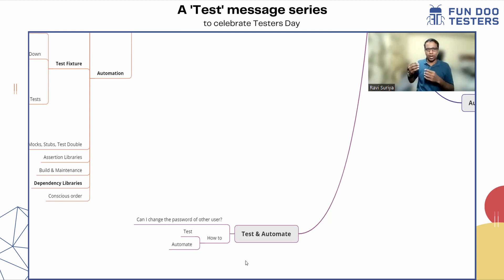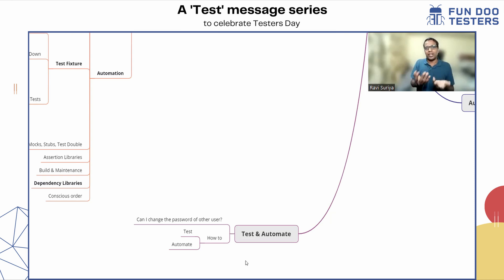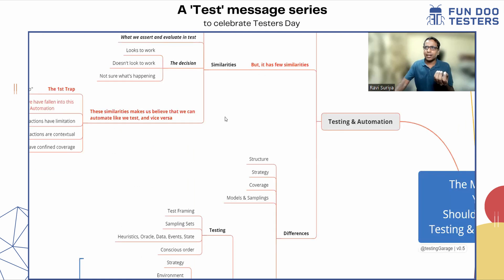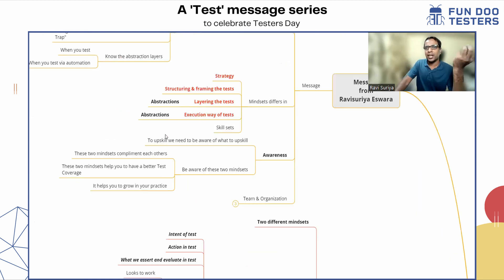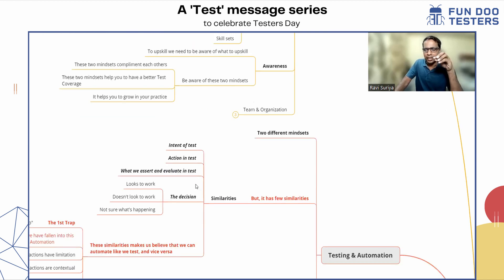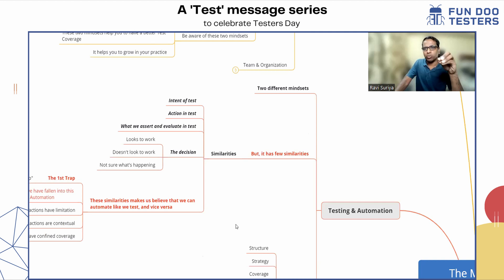The mindset I apply for testing as a human, I cannot apply the same thing in automation. I have to think and plan well to structure my test. Testing and automation have a few things in common — the intent of a test, action in a test, what we assert and evaluate. These similarities make us believe we can automate like we test and vice versa, but no, we can't do that. This is the first trap we fall into when we start writing or practicing automation.